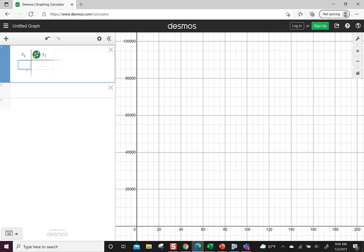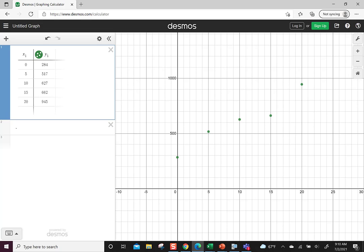Once we're in Desmos, we're going to find our regression function that models this data. We'll round any coefficients to four decimal places. Then based on that, we'll make a prediction—we'll forecast what will happen in 2023. To start, we need to enter the data. This plus sign says add an item. We want to add a table. Our points were 0 with 284, at 5 we had 517, at 10 it was 627, at 15 we had 662, and at 20 we had 945. There's a magnifying glass that says zoom fit, so hit zoom fit. It makes the screen for us so we didn't have to pick the window.